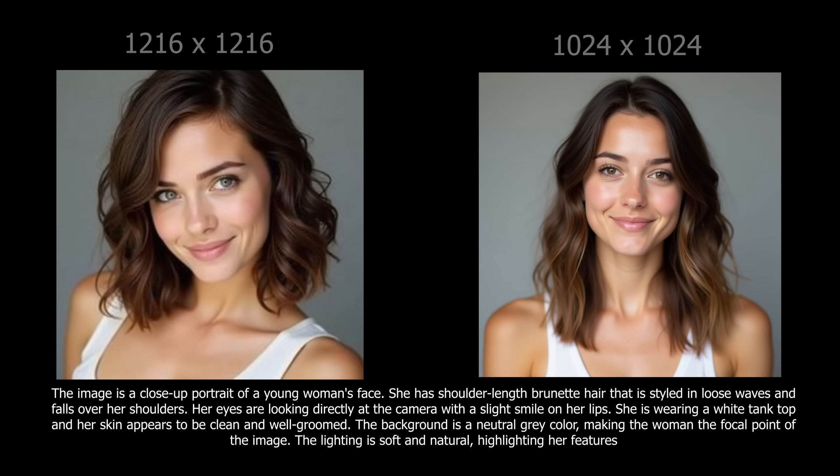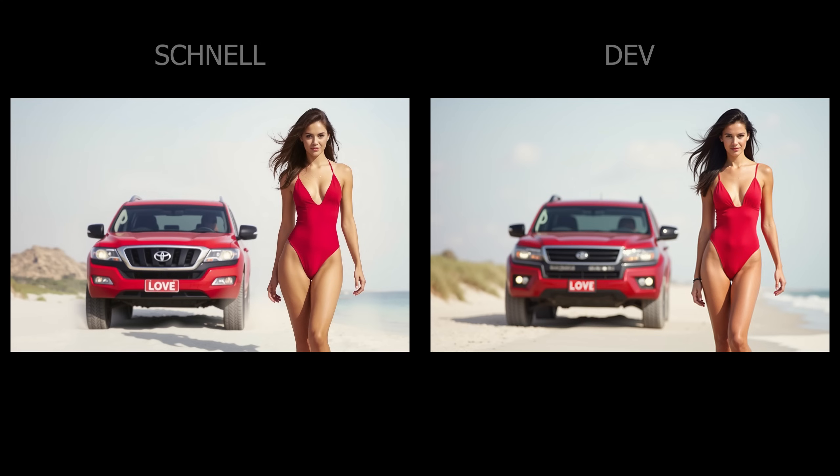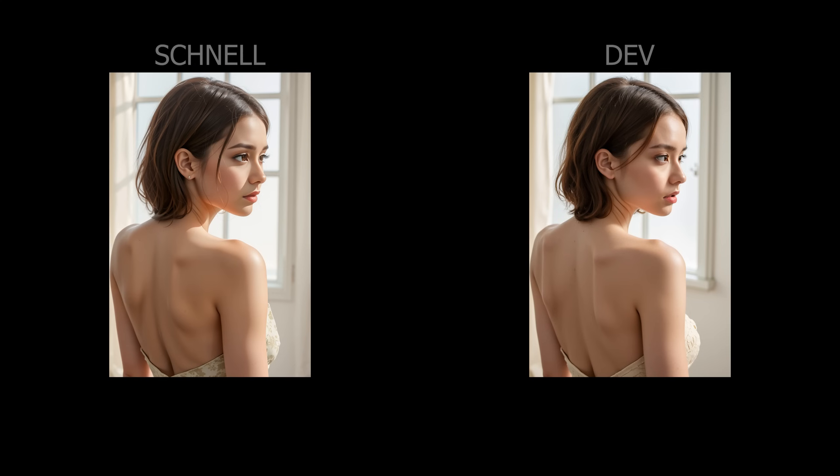Regarding image-to-image, here too we have very significant differences. I tried to make the test as accurate as possible with exactly the same data and the same denoise, although denoise works a little differently with a small number of steps. From what I saw, working in image-to-image with Flux Dev there is much more freedom with the denoise. There are very big differences between images made in image-to-image with Schnell and with Dev. In the vast majority of results, photos created in Flux Dev are on a different level than the results of Schnell.